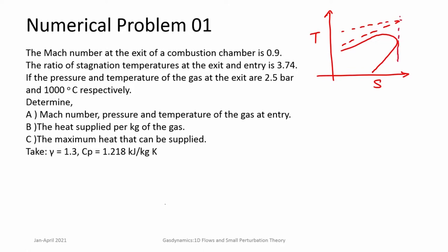One should look at stagnation points also. There is a maximum entropy point which is for Mach number equal to 1, and there is a point where enthalpy or temperature is maximum. The subsonic branch is at the top and supersonic branch is at the bottom, and heat addition always drives the flow towards sonic conditions. Maximum amount of heat that can be added is at the sonic point, which is the critical point. The difference of stagnation temperatures will tell you the maximum heat that can be added. Now let us look at some of the problems.